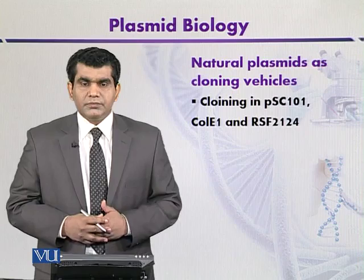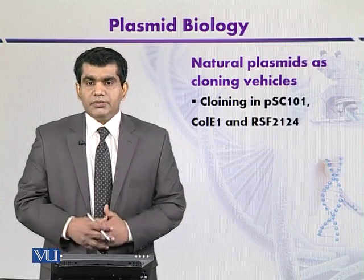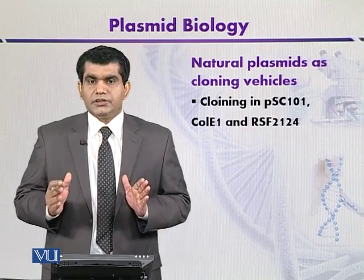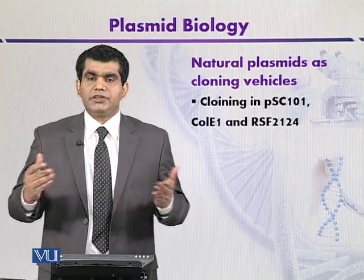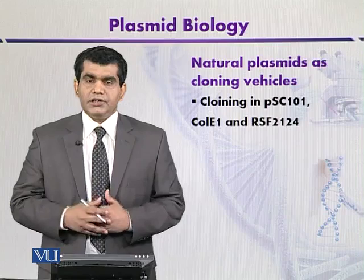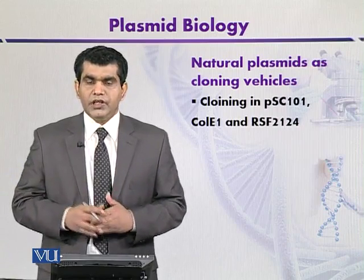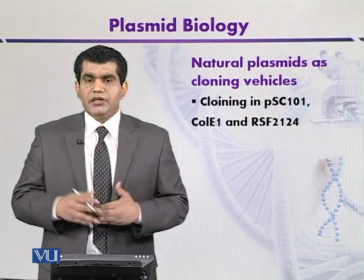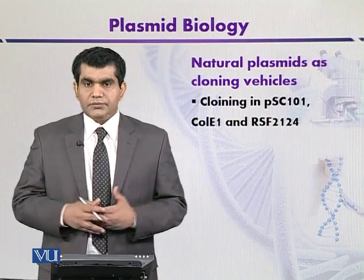These natural plasmids can be used as cloning vectors, but there are certain limitations. For example, if PSC-101 is used as a cloning vector, then the plasmid can be digested with EcoRI, since a single site is present for this restriction enzyme on PSC-101. Similarly, the foreign DNA containing our gene of interest can also be digested with EcoRI, and then both can be ligated. Tetracycline resistance can be used for the selection of recombinants.